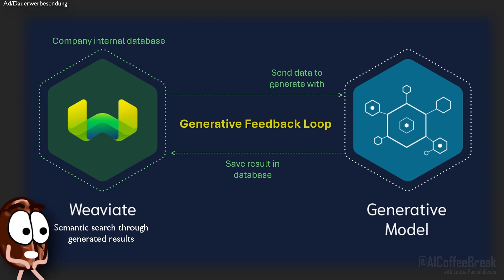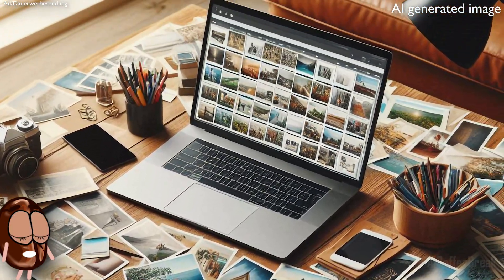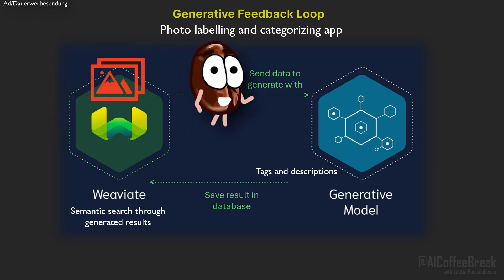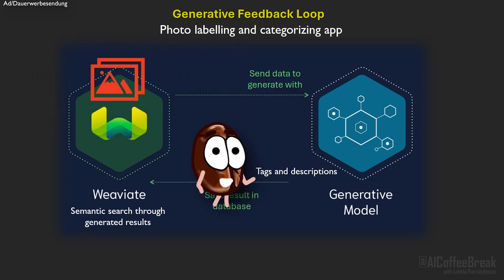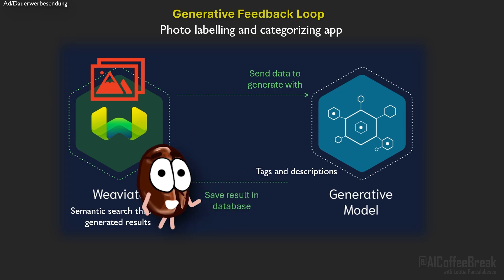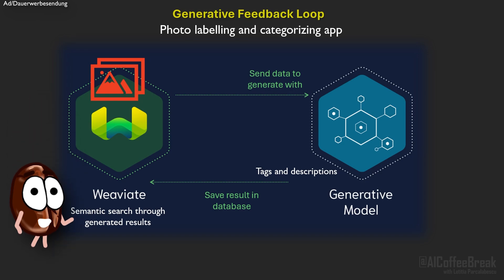Let's give some examples of applications that require generative feedback loops. Maybe you want to do a photo labeling and categorizing app: you have a database of photos and you want to use metadata in a vision language model like GPT-4V to generate tags or descriptions of photos. You can then save these tags or descriptions back to the database and use them to find similar photos.